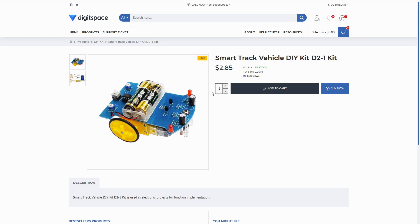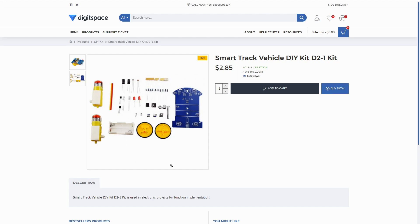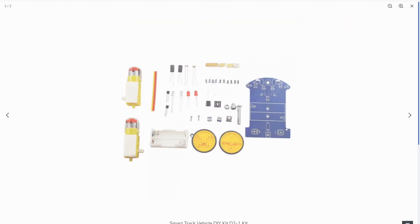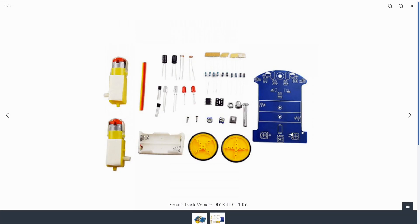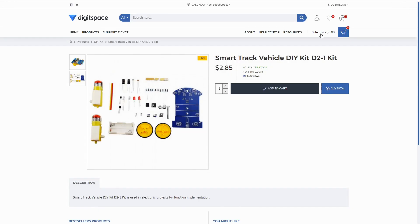Let's have a look. So this is SmartTrack Vehicle DIY kit D2-1. Not sure what that means but it's a small little two-wheeled robot. Parts list looks quite simple. Seems to use a PCB as its main structural body which is an interesting little technique. It's only two dollars and 85 cents. It's quite a cheap little robot. I'm quite interested to see what it does.